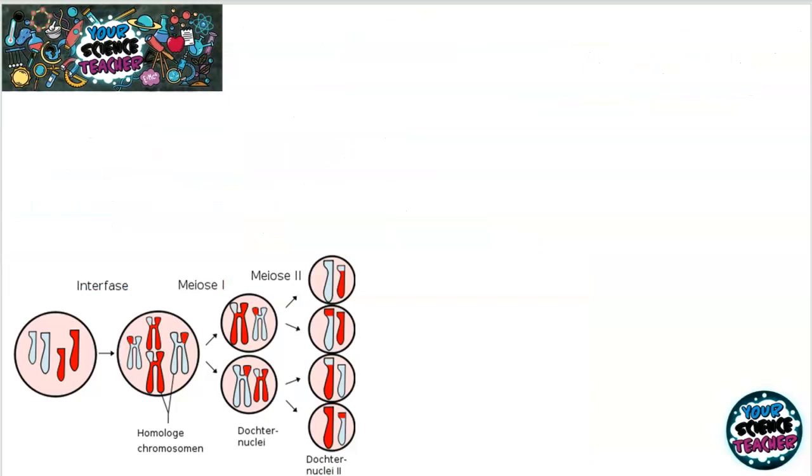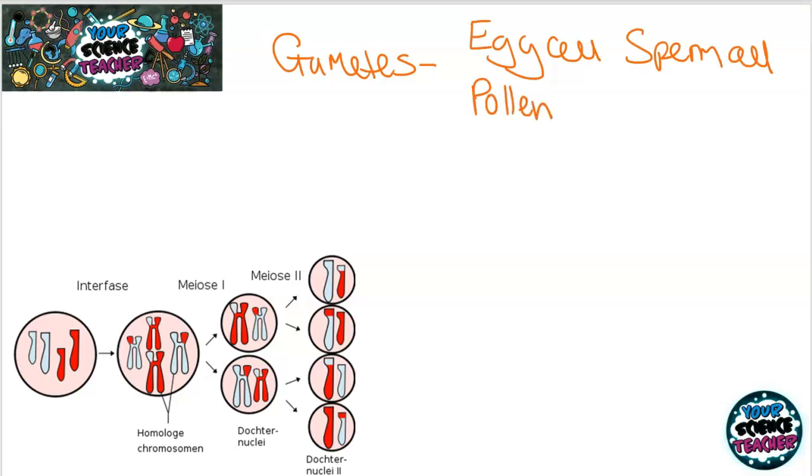For sexual reproduction to occur, we need to create sex cells, which are also known as gametes. And obviously, the female gamete is the egg cell and the male gamete is the sperm cell. Plants can also reproduce sexually and their gametes are pollen, which is the male sex cell in a plant, and they also contain egg cells as well. So if it is sexual reproduction animals, it's egg cells and sperms. And if it's plants, it's pollen and egg cells.